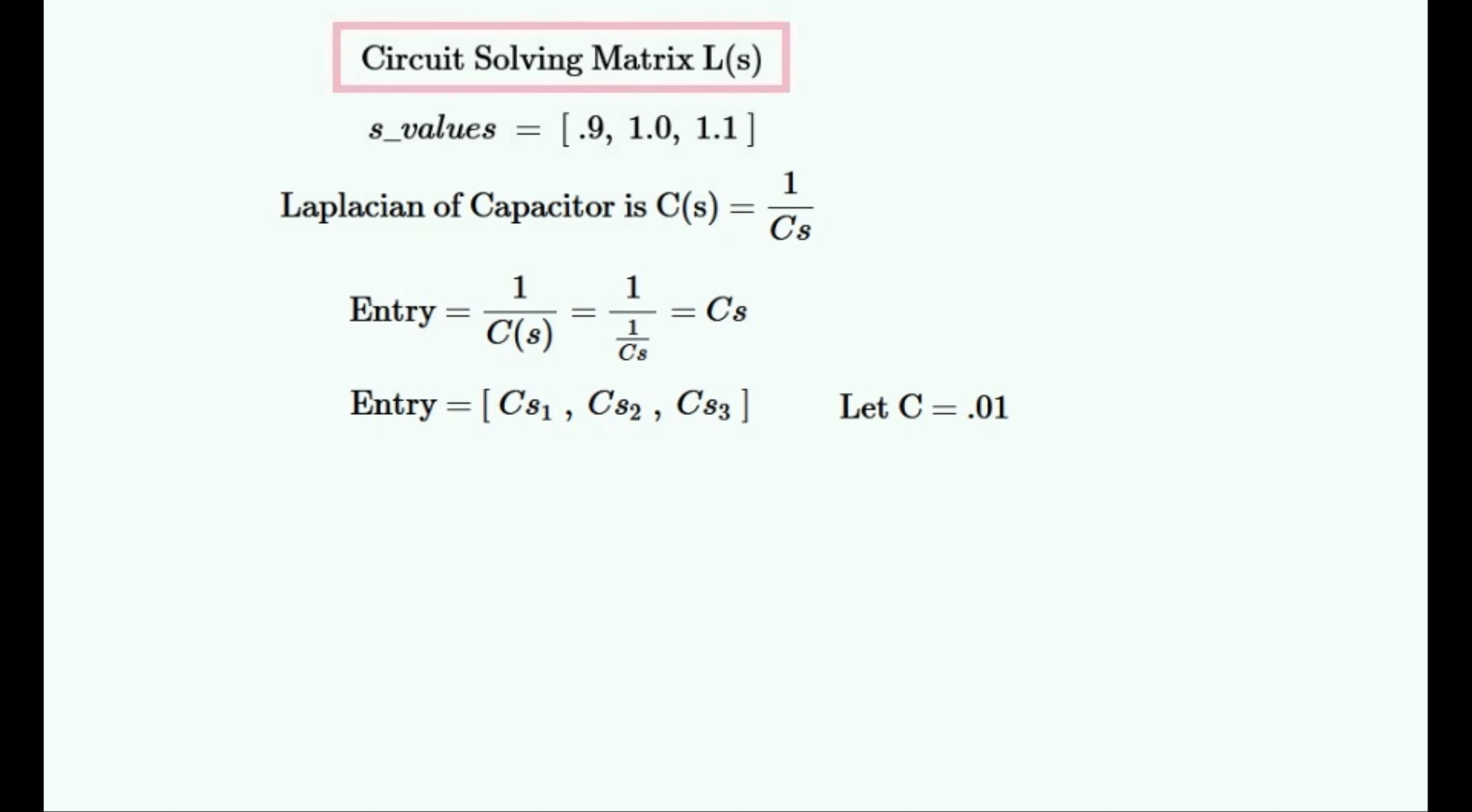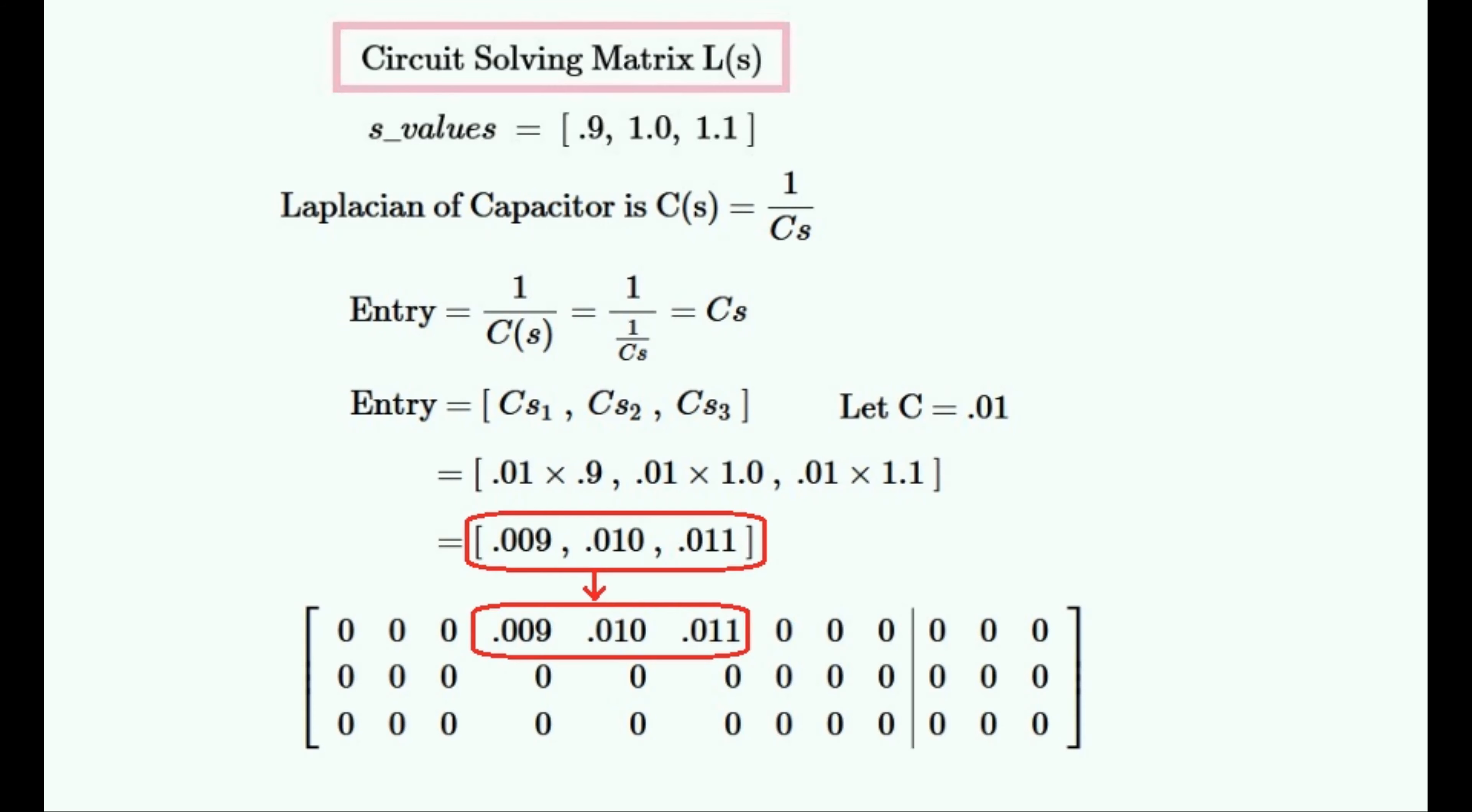The circuit program would then look up the value of the capacitance corresponding to this particular capacitor in this circuit. Then all of the values would be substituted into this row vector, and this is what this row vector is after it has been evaluated. And so this row vector is placed in this position in the circuit solving matrix.